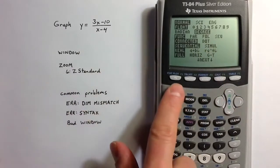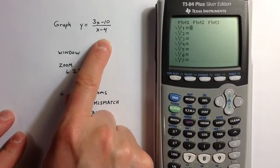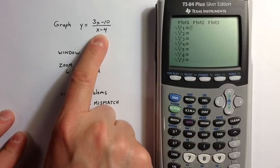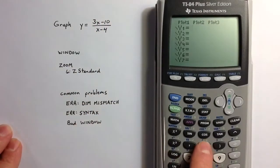To graph the function, I want to define the function in the y equals menu. Because division has a higher priority than subtraction, I need to be careful with this expression and use parentheses around the numerator.